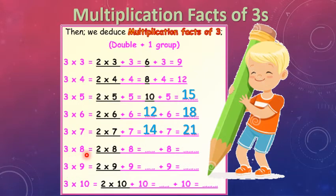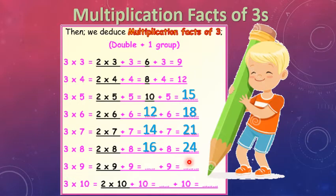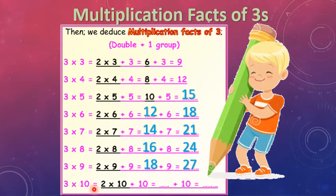For 3 × 8, it means 3 groups, each group has 8 elements. We double these elements and add 1 group: 2 × 8 equals 16, plus 8 equals 24. For 3 × 9, it means 3 groups, each group has 9 elements: 2 × 9 plus 9. 2 × 9 equals 18, plus 9 equals 27. For 3 × 10, double the number of elements and add 1 more group: 2 × 10 equals 20, plus 10 equals 30.